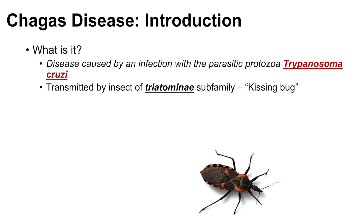Here's a picture of the kissing bug. The way that the Trypanosoma cruzi protozoa is transmitted from the kissing bug to a person is through the fecal material of the kissing bug coming into contact with the mucosal membrane of the person.